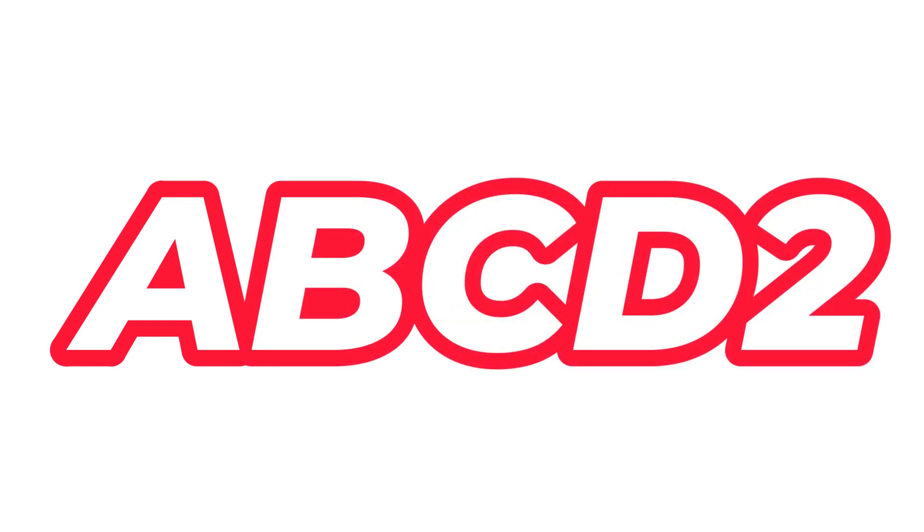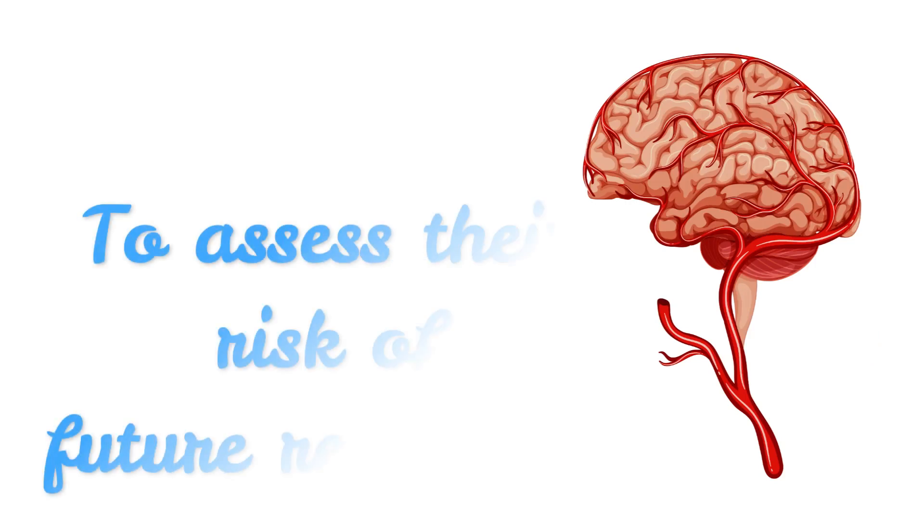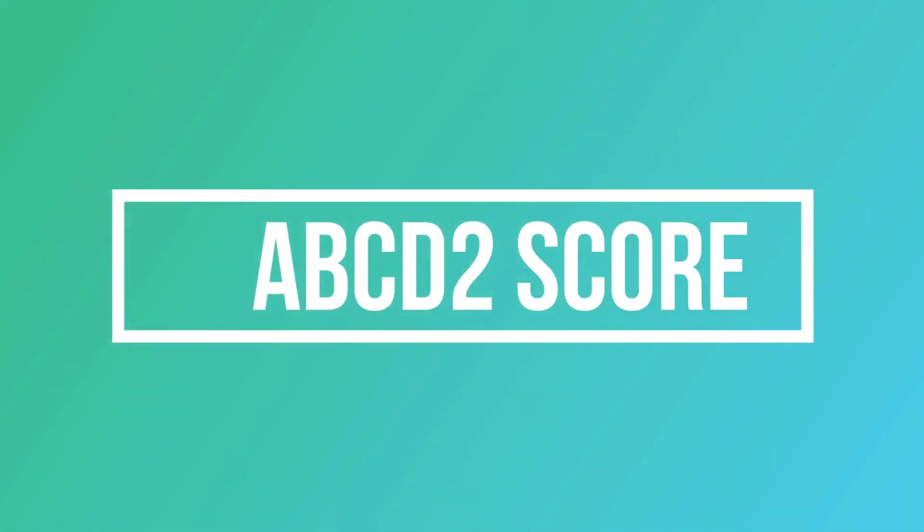The significance of a TIA is not the symptoms it produces but the risk for future events it portends. We use a scoring system called ABCD2 to triage patients with TIA to assess their risk for recurrent events within the first three months because most of these events occur within the first two days.